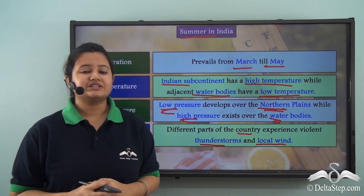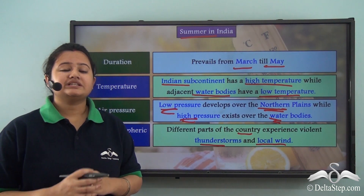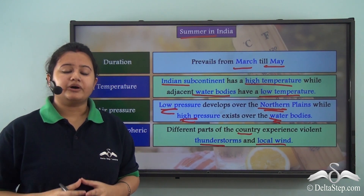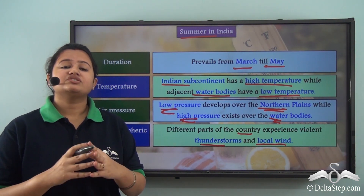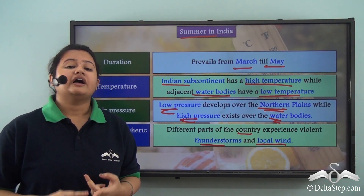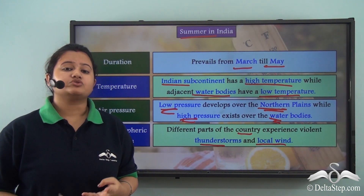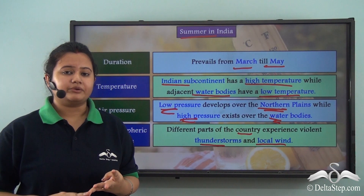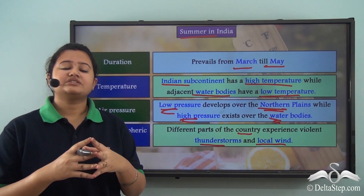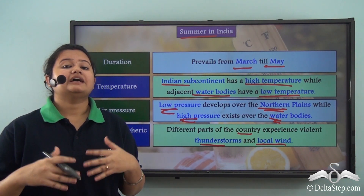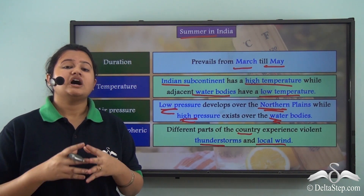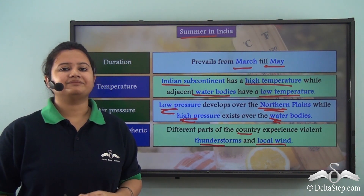This brings us to the end of today's lesson. In this lesson, we discussed the major seasons of India — summer, advancing monsoon, retreating monsoon, and winter — with a special focus on summer season. In our subsequent lessons, we shall be discussing about the other Indian seasons.